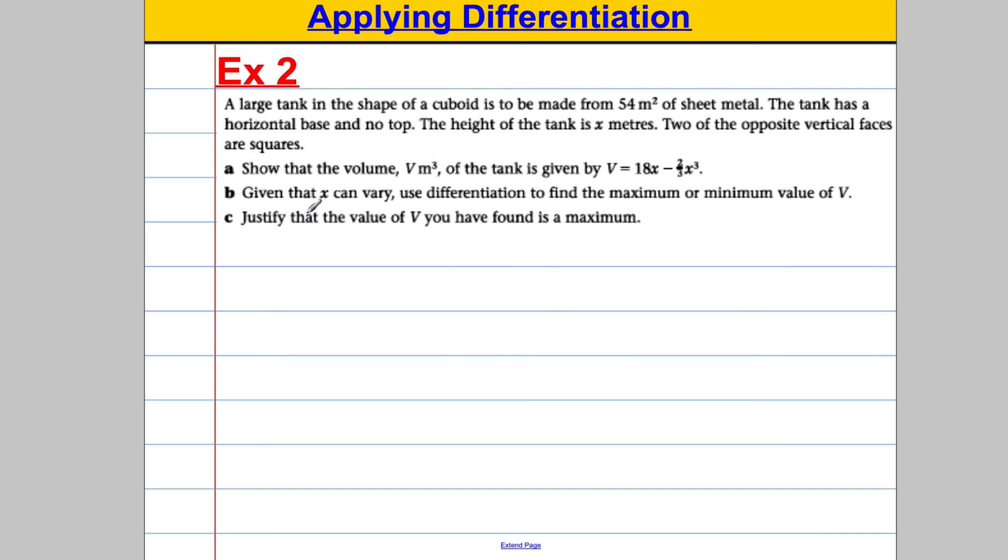Okay, moving on to part B. Given that x can vary, use differentiation to find the maximum or minimum value of V. Justify the value found as a maximum. So for part B, we're going to state our volume is equal to 18x subtract 2/3 x cubed. This is the easy part now. We've done all the hard part. So to find a turning point, solve dV/dx equals 0.